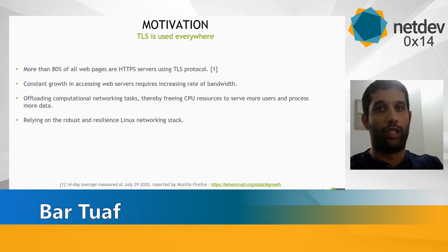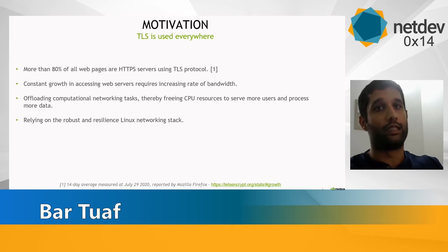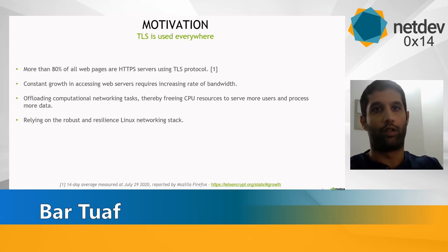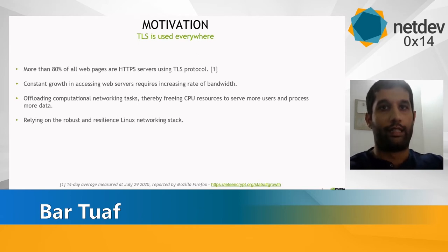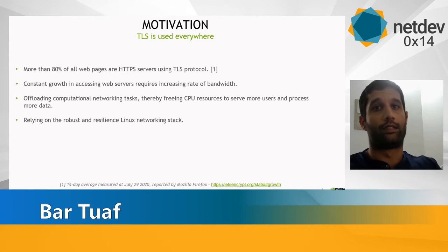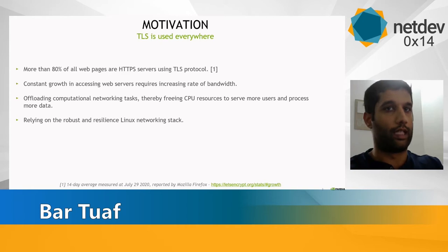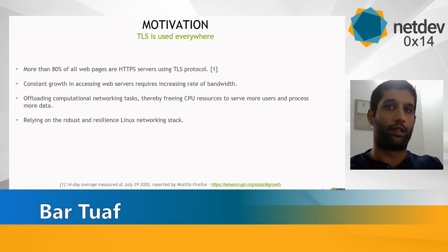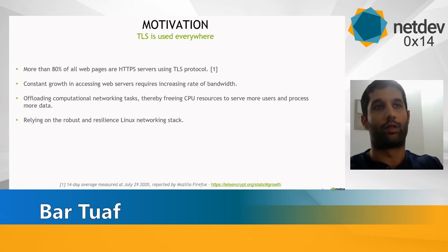100G link speed requires these offloads in order to release CPU power to the data processing layer. The solution is based on a pretty much unchanged Linux networking stack with the addition of a TLS non-crypto flow, so we get all the benefits of a robust and resilient networking stack.